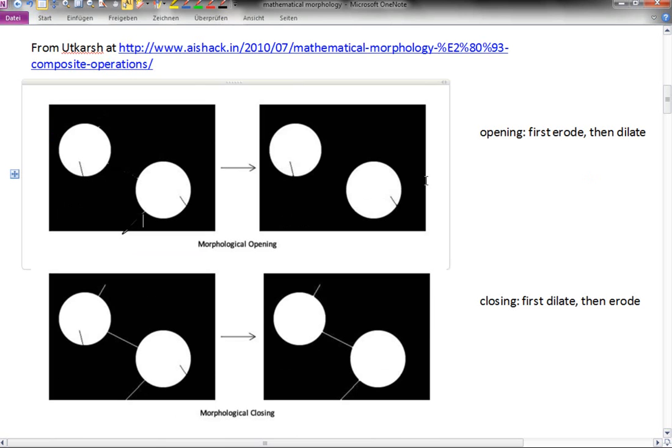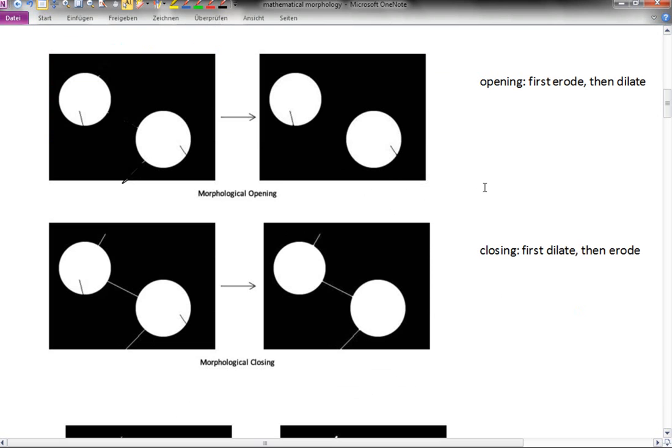Then there is closing. The opening name comes from the opening of holes. The closing similarly closes gaps. Here you first dilate, which in this case will make these lines thicker, make everything a little bit bigger, and it will also close these gaps.